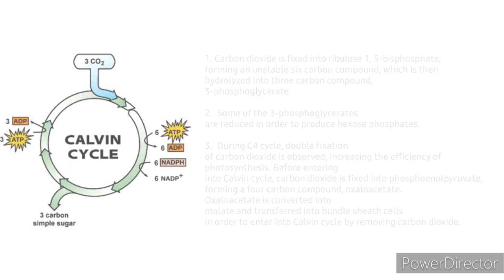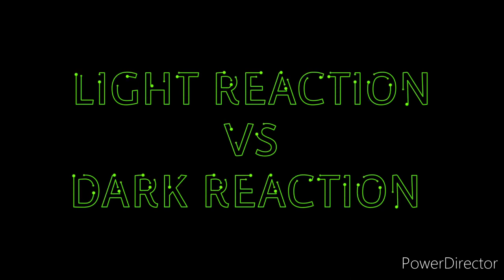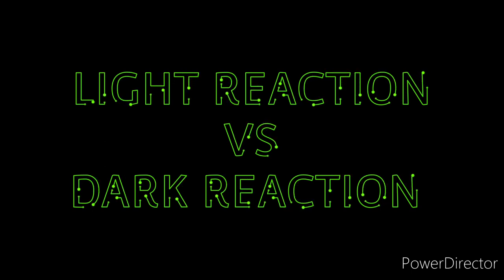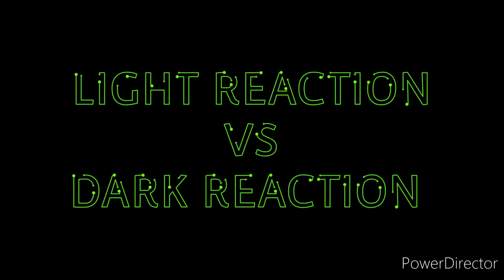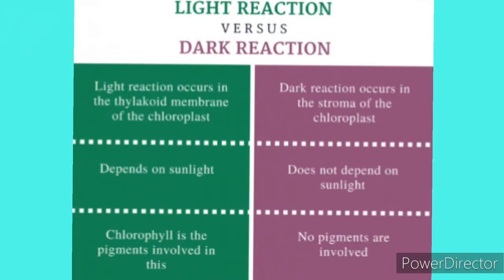The main difference between light and dark reaction is that light reaction is the first stage of photosynthesis, which traps light energy in order to produce ATP and NADPH, whereas dark reaction is the second stage of photosynthesis, which produces glucose by using the energy from ATP and NADPH produced from the light reaction.